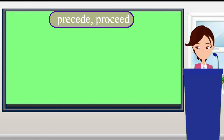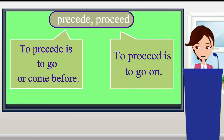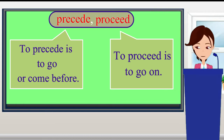Next are 'precede' and 'proceed.' To precede is to go or come before, and to proceed is to go on. In 'precede,' the prefix 'pre' means before, so precede means to go before. In 'proceed,' the prefix 'pro' means forward, and therefore proceed means to go forward.